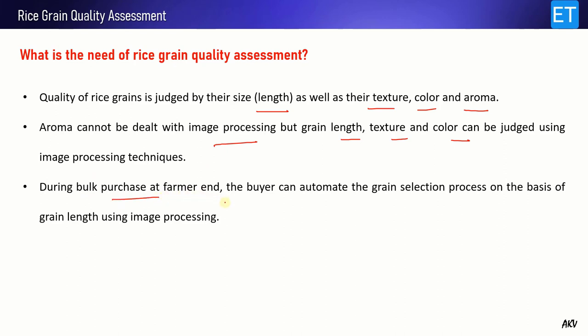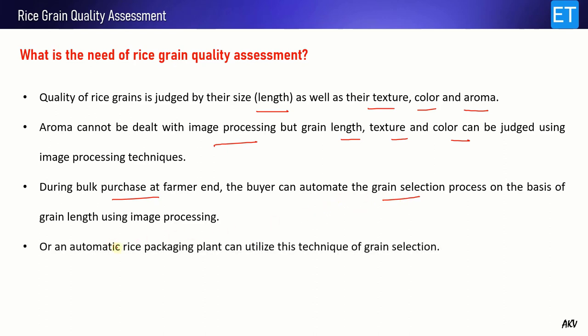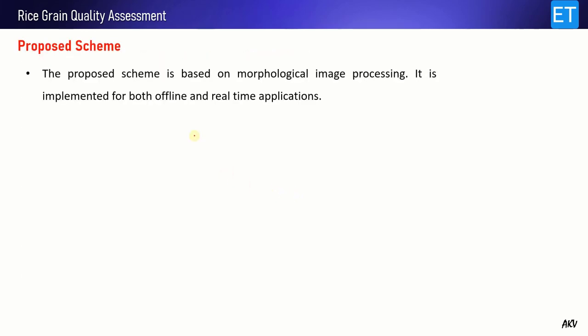During bulk purchase, the farmer and the buyer can automate the whole process of grain selection. Also in an automatic rice packaging plant, this scheme can be utilized. So to automate the grain selection process, this technique can be used. Now let's have a look at the proposed scheme.